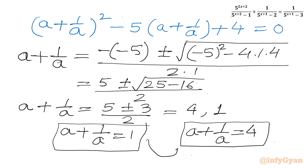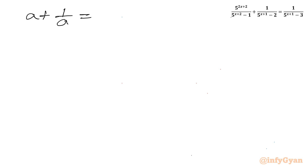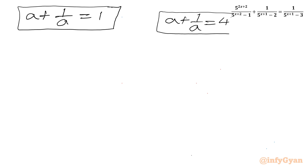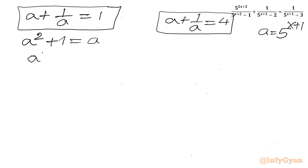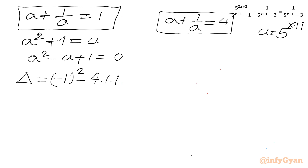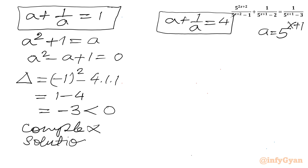For the first case, a + 1/a = 1: multiplying by a gives a² - a + 1 = 0. Checking the discriminant: (-1)² - 4(1)(1) = 1 - 4 = -3, which is negative. This gives only complex solutions, so this case is rejected.